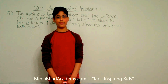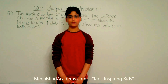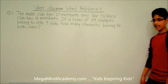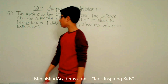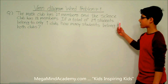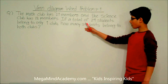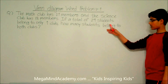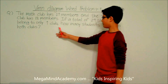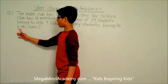Hi! Today we're going to learn about Venn diagram word problems. Let's say we have a problem like the math club has 21 members and the science club has 18 members. If a total of 29 students belong to only one club, how many students belong to both clubs?